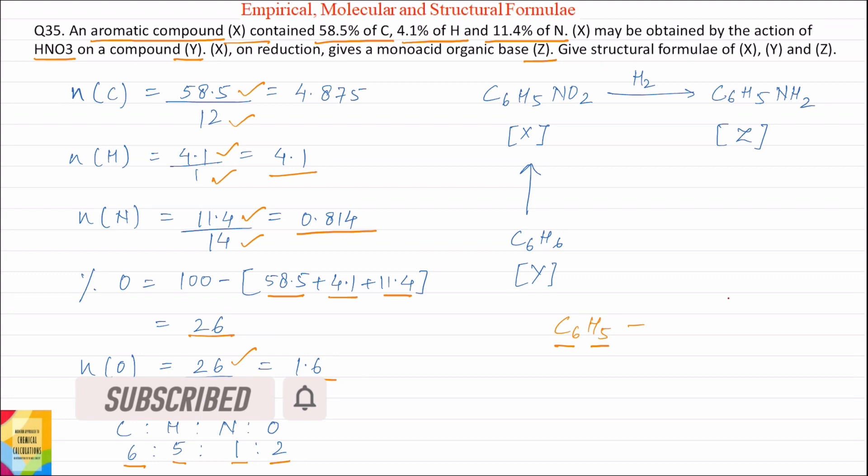The moles of carbon to hydrogen ratio is 6:5. So 6 carbon and 5 hydrogen we get from here. And we can say that empirical formula and molecular formula is the same.